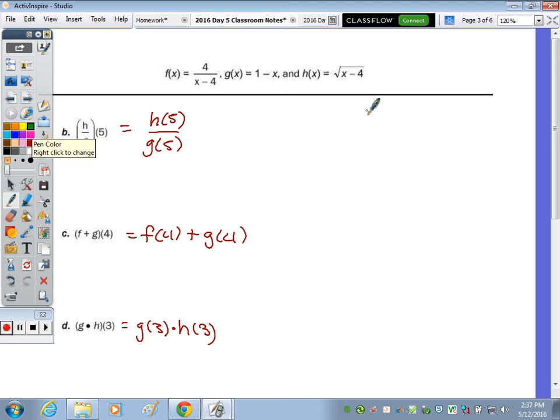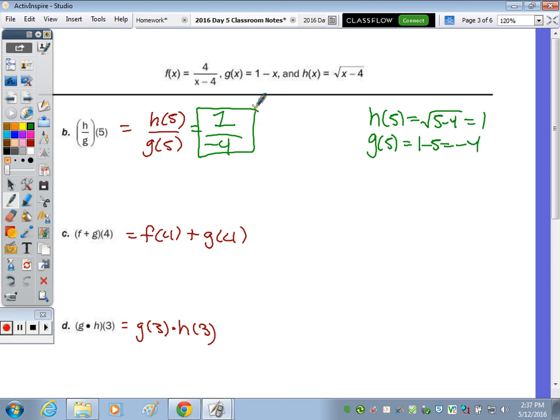So H of 5 is the square root of 5 minus 4, which is 1. 5 minus 4 is 1, the square root of 1 is 1. So H of 5 is 1, and then we're going to divide it by G of 5, which is 1 minus 5, which is a negative 4. So that's just negative 1 fourth. You can give me the decimal. I would accept negative 0.25, but that's our final answer.